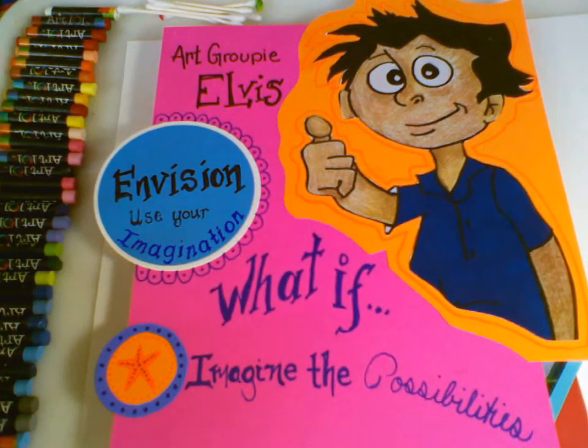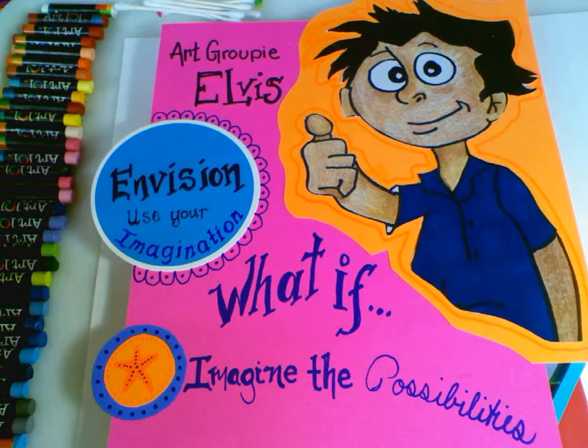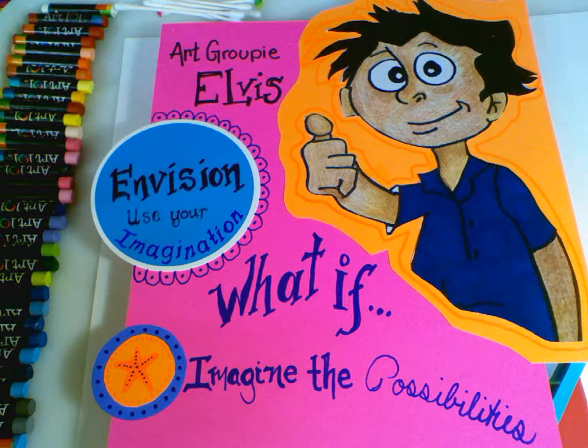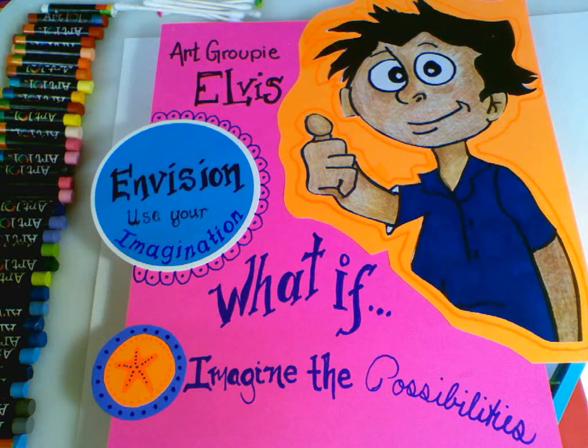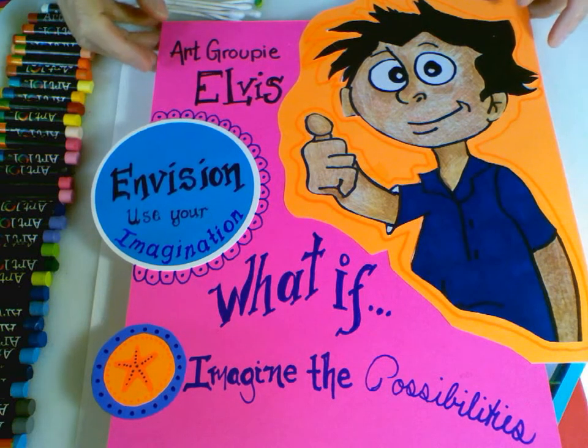The groupie that we're going to be working with today is Elvis. Elvis is an art groupie that envisions. He uses his imagination and he always asks himself, what if? And he tries to imagine all the different possibilities that he could do to make his art better. So Elvis and Envision.